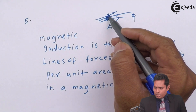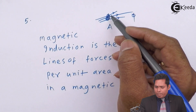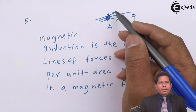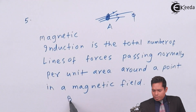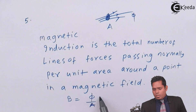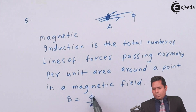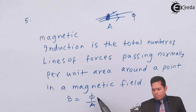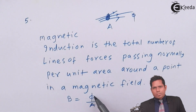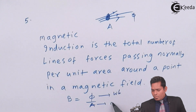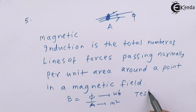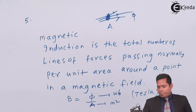The total field lines of force passing normally to this area — if the area is not normal we take the component, which we will discuss in higher standards. So the magnetic induction is the total number of field lines passing normally divided by the area, and that gives you the magnetic induction. The flux is in Weber, the area is in meter squared, so this is Weber per meter squared, and this unit is called Tesla. That is the unit of magnetic induction.